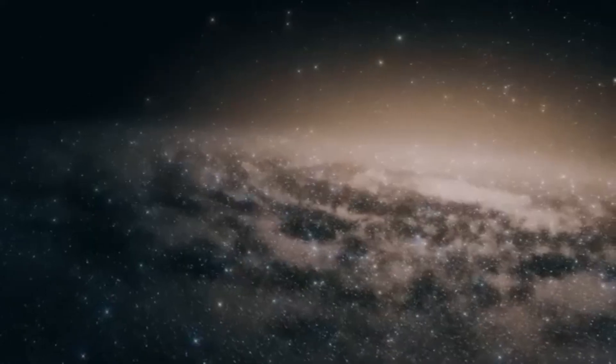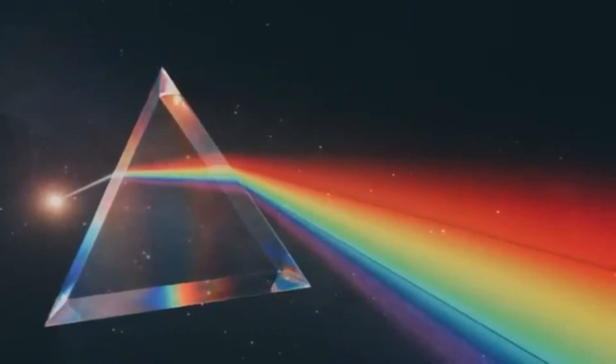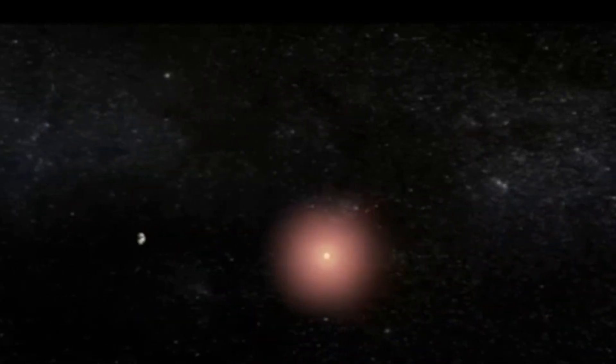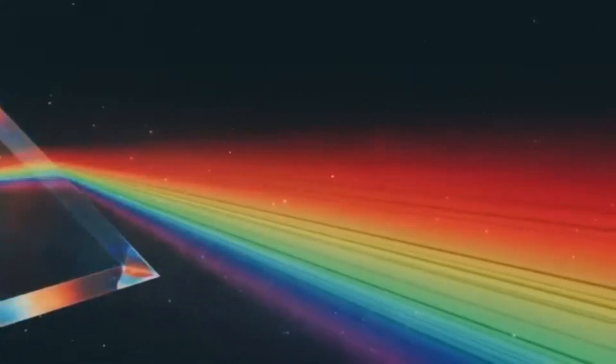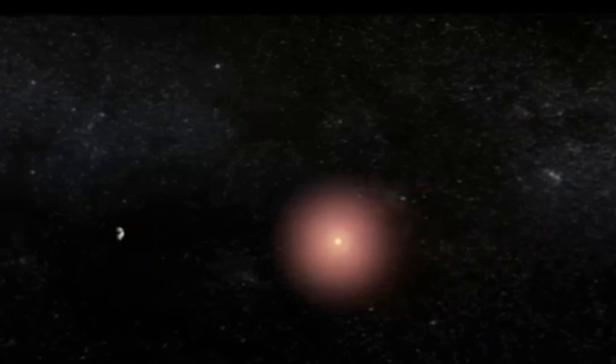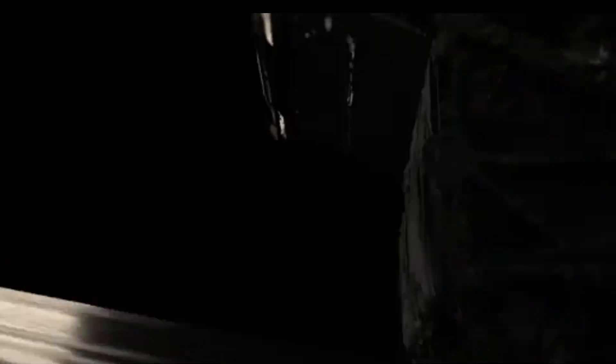The James Webb Telescope will be able to answer many of them. The telescope's instruments are capable of measuring the chemical makeup of distant planets' atmospheres, allowing scientists to detect gases such as oxygen, methane, and water vapor, each of which could indicate biological activity.